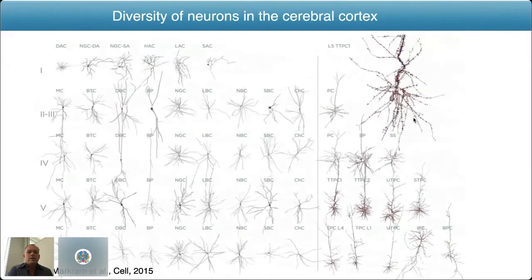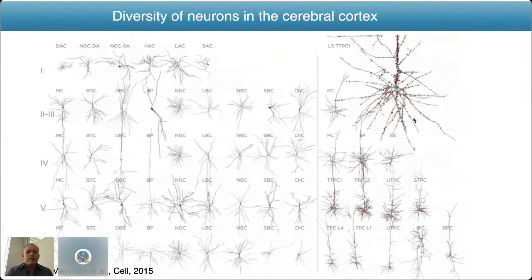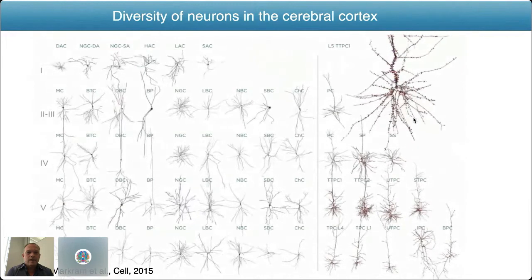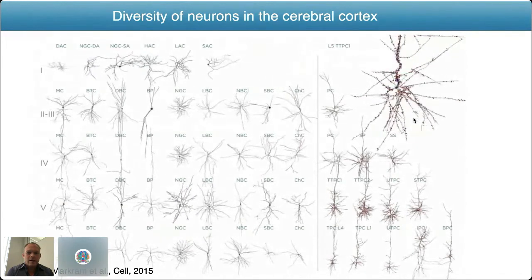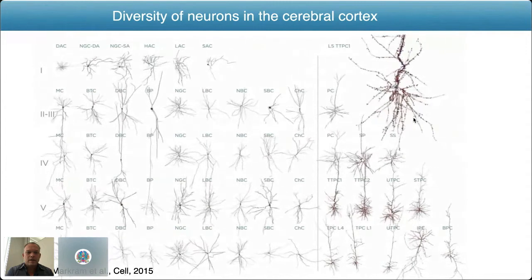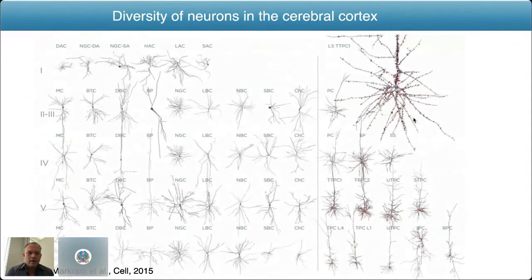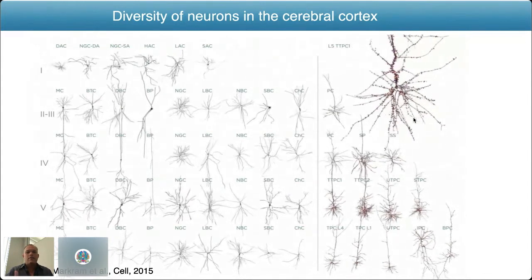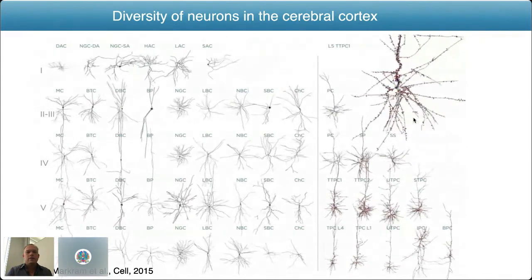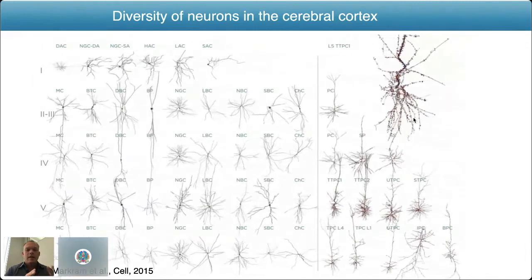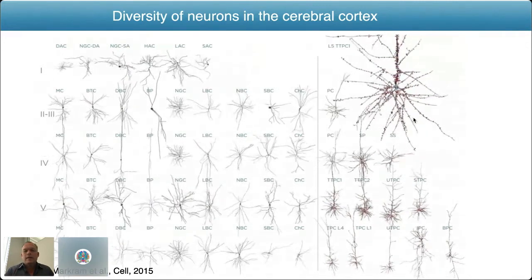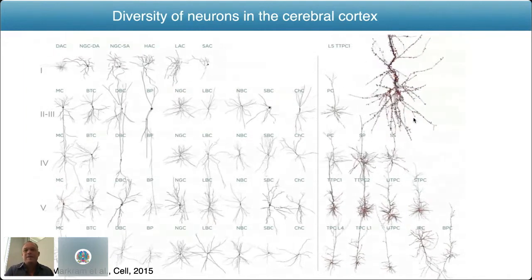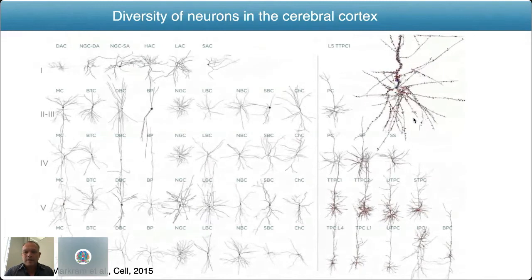The approach we took was really to take the building blocks of this circuit. These are examples of the neuron morphologies that have been reconstructed from different layers of cortex within this microcircuit — layer one, two, three, layer four, five, and six. On the left you have the interneurons and the diversity of the different types of inhibitory interneurons, whereas on the right you've got the pyramidal cells — the excitatory cells.